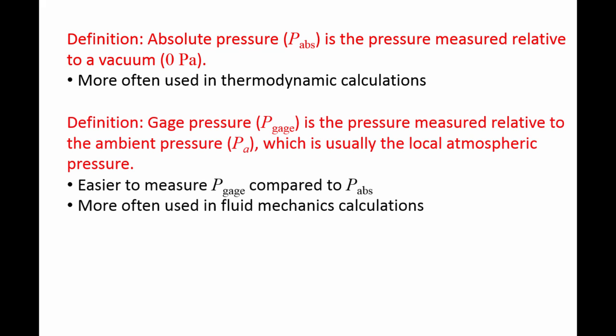If we measure the pressure relative to the ambient pressure, which is usually the local atmospheric pressure, we are measuring the gauge pressure, denoted by P gauge.